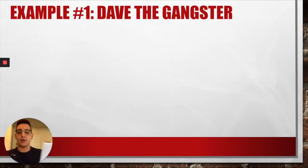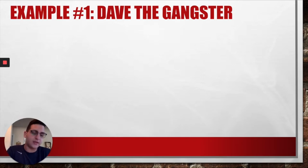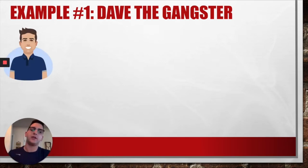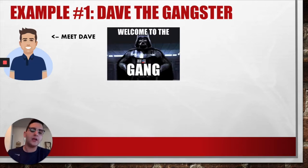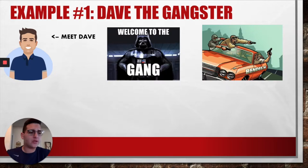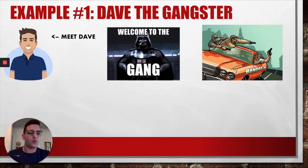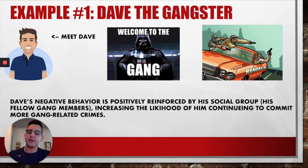For our first example, we're going to talk about gangs, which are a form of an intimate social group. Dave is a person who has just been admitted into a gang and commits his first illegal act — a drive-by shooting on a rival gang member. After the shooting, Dave receives praise from all the other gang members including the leaders, and realizes this act earned him respect. Dave enjoys his praise and wants to move up through the ranks. His illegal behavior is being positively reinforced by his social group, and therefore it is likely that Dave will continue to commit gang-related crimes.